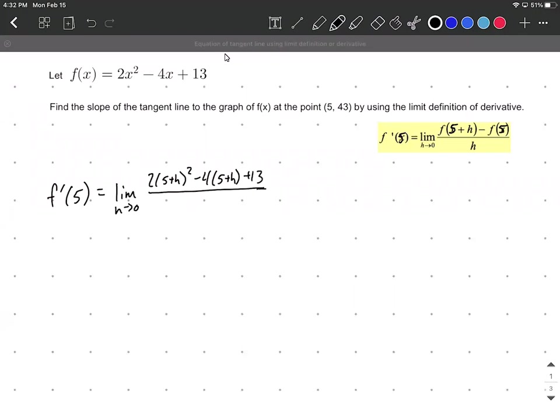From there, we subtract the original function with 5 plugged in: 2(5²) - 4(5) + 13, all over h.